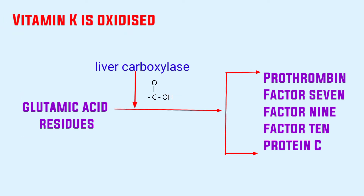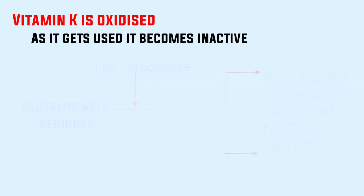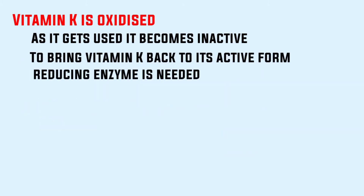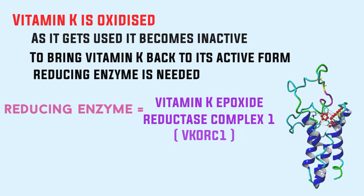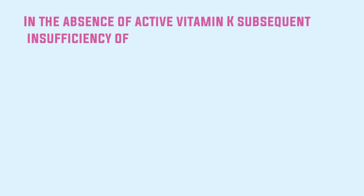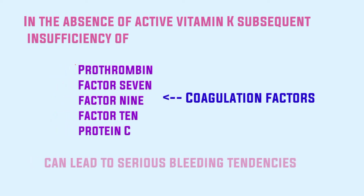When the carboxyl group is added to the glutamic acid residues on the immature clotting factors, vitamin K is oxidized and becomes inactive. To bring vitamin K back to its active form, a reducing enzyme is needed — in this case it is vitamin K epoxide reductase complex 1, or VKORC1. In the absence of active vitamin K, insufficiency of these coagulation factors can lead to serious bleeding tendencies.